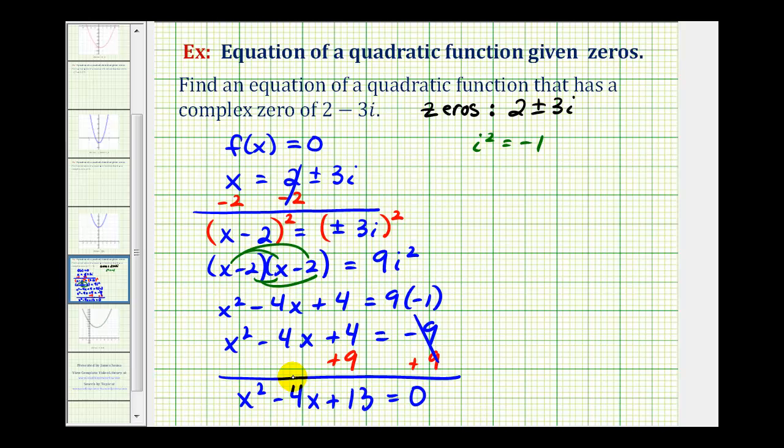And now we have our quadratic function. Notice how we started with f of x equals 0 and we ended with the quantity x squared minus 4x plus 13 equals 0. Therefore a possible quadratic function that has the given zeros would be f of x equals x squared minus 4x plus 13.